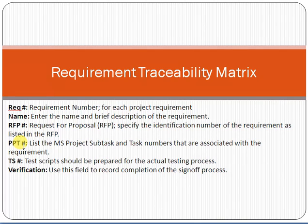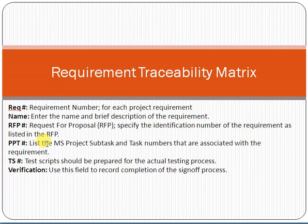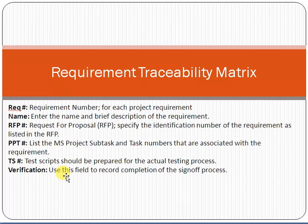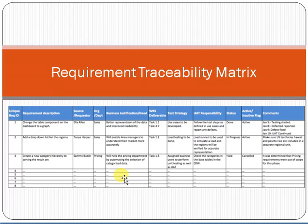Next is the PPT Number — PPT stands for Project Plan Task. As per the MS Project plan, each requirement has a reference task number, such as 42 or 52. Then there is the Test Script field — since this deliverable will be tested, the test script number is recorded here. The Verification field is used to record completion of the sign-off process, confirming that after delivering the requirement to the customer, it has been formally signed off.